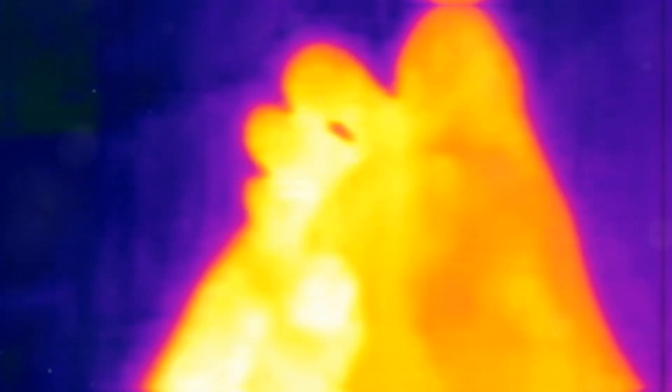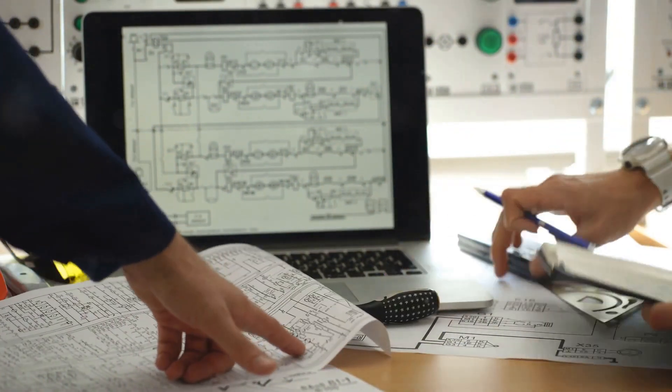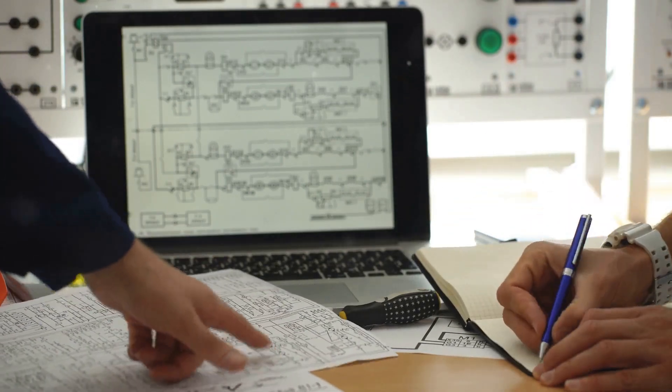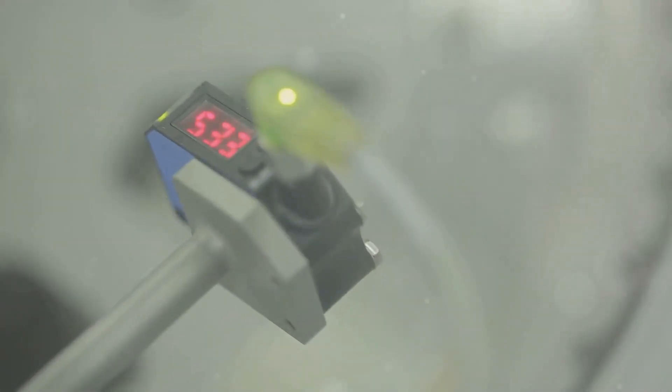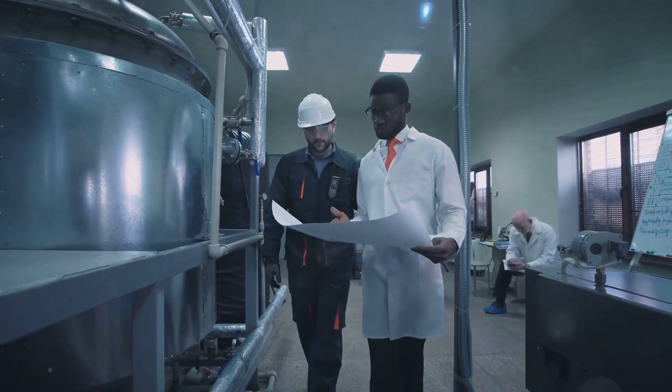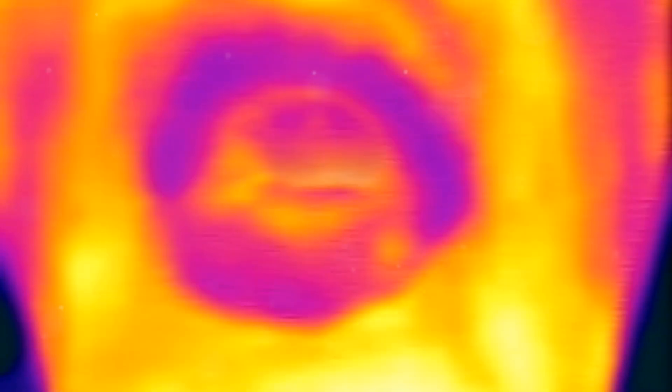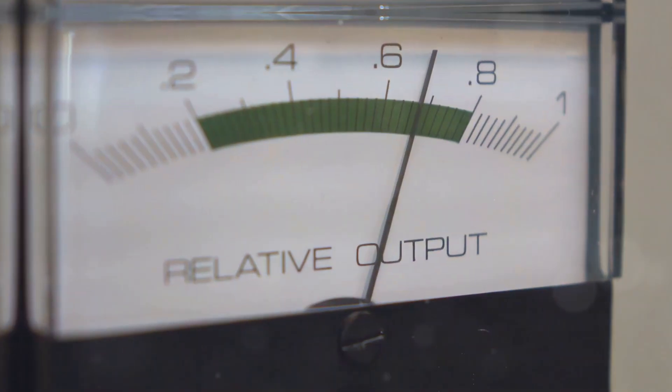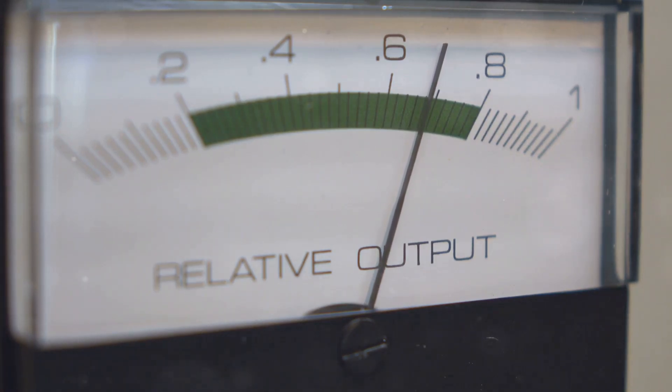Running a heat transfer simulation in Ansys Fluent is like solving a complex puzzle. The software iteratively solves the energy equation, adjusting the temperature field until a state of equilibrium is reached. Convergence indicates that the solution has stabilized and the results are reliable. Monitoring convergence is crucial during a simulation. Fluent provides various residuals, which measure the imbalances in the energy equation. As the solution converges, these residuals should decrease and approach a predefined tolerance level.